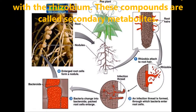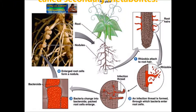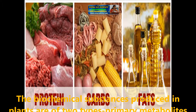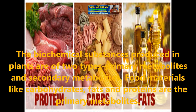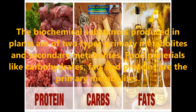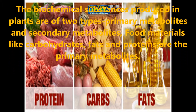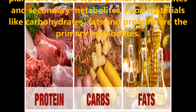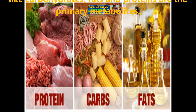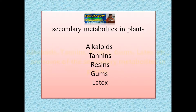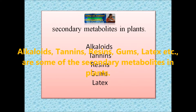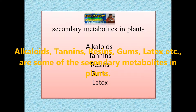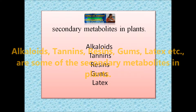These compounds are called secondary metabolites. The biochemical substances produced in plants are of two types: primary metabolites and secondary metabolites. Food materials like carbohydrates, fats and proteins are the primary metabolites. Alkaloids, tannins, resins, gums and latex are some of the secondary metabolites in plants.